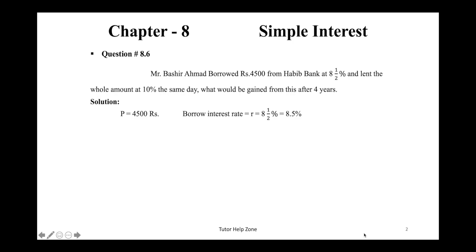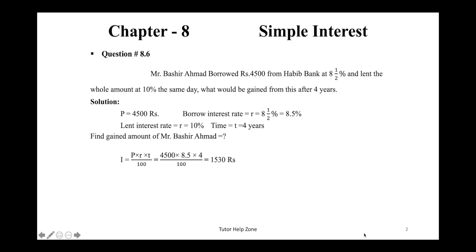So 8½ percent is equal to 8.5 percent. For lending, the interest rate R is equal to 10 percent, and time is 4 years. I have read the statement and noted the given information. To find the gain amount, we use the simple interest formula: I = P × R × T ÷ 100. Putting in the values, the answer is Rs. 1530. This is our simple interest for the borrowed amount.